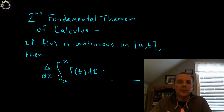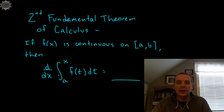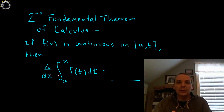We're all familiar with the fundamental theorem of calculus. It's one of the biggest theorems we study in Calc 1, and it helps us find the area under a curve using anti-derivatives — where you take the anti-derivative of your integrand, plug in the upper and lower limits of integration, and subtract. That gives you the area under the curve.